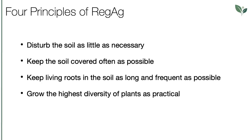Just as in Lecture 3, Regec in Practice 1, Regenerative Vegetable Production, the same four regenerative principles should always be observed in agricultural crop production. First, disturb the soil as little as necessary. Second, keep the soil covered as often as possible. Third, keep living roots in the soil as long and as frequently as possible. And last, grow the highest diversity of plants as practical.